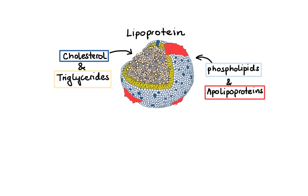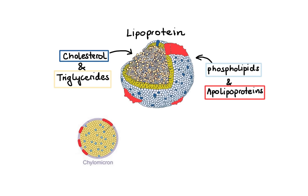Depending on the variation in lipid and apolipoprotein composition as well as their density, lipoproteins can be divided into four major types: chylomicrons, very low density lipoprotein (VLDL), low density lipoprotein (LDL), and high density lipoprotein (HDL).